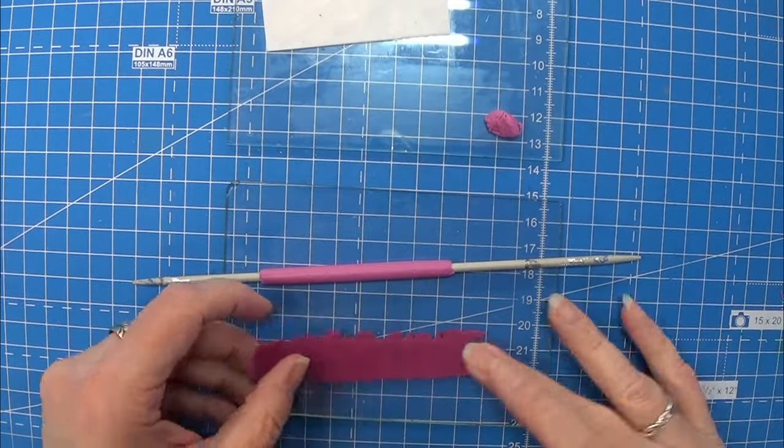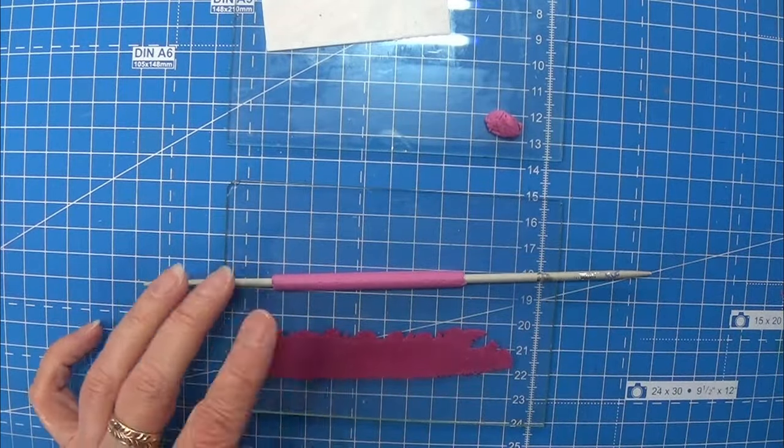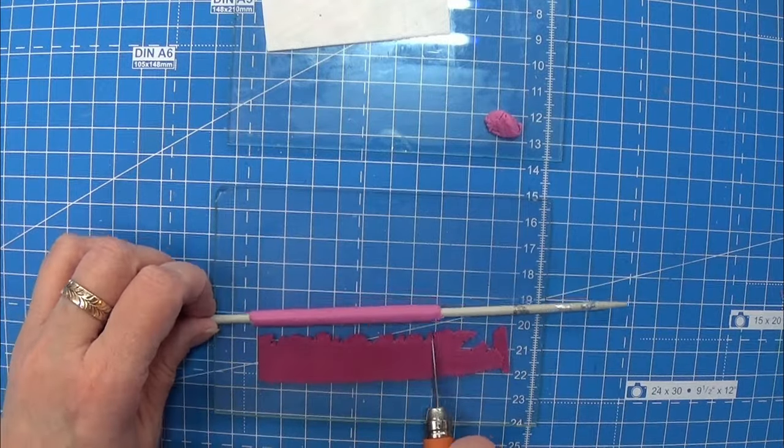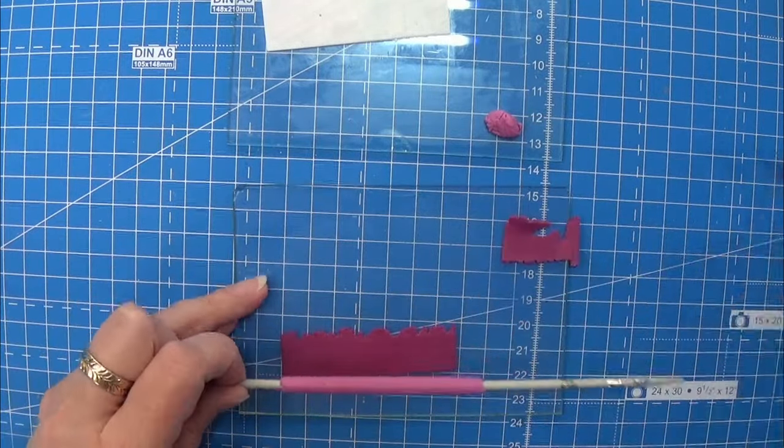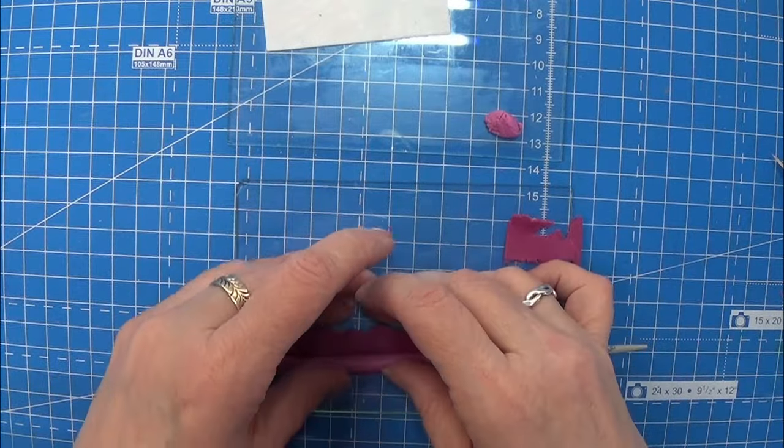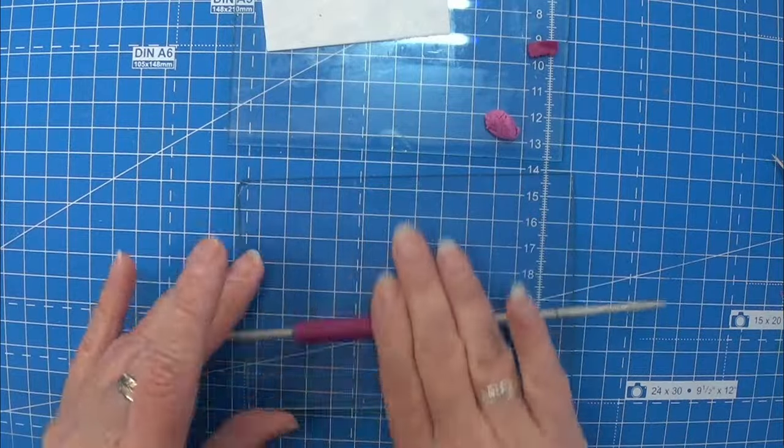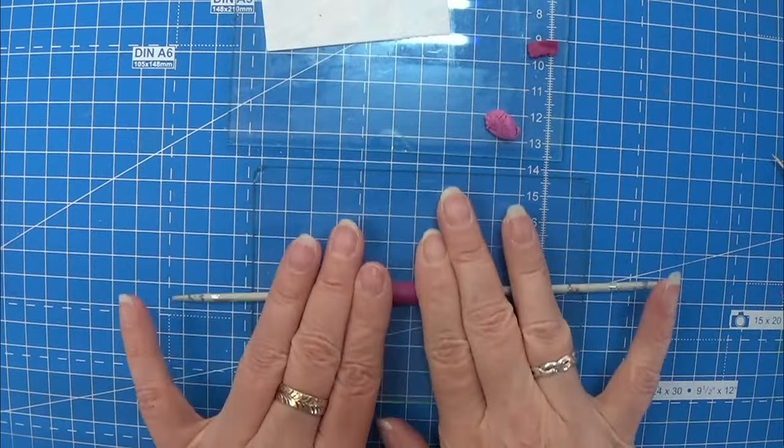Then I took some of my bordeaux colored clay and I rolled it out on the same setting as this mixed between the bordeaux and the translucent. And I'm going to wrap that around this again. I'm not letting it overlay but I'm making sure it is going all the way around.